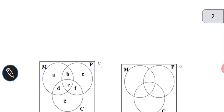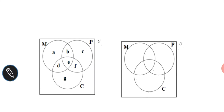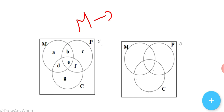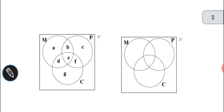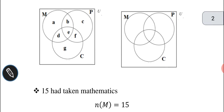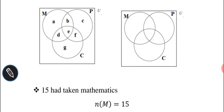Using a Venn diagram, we are going to solve this problem. Here 3 sets are given: M, P, and C. M represents the set of students taking mathematics, P represents physics, and C represents chemistry. Given that 15 had taken mathematics, so N(M) = 15.